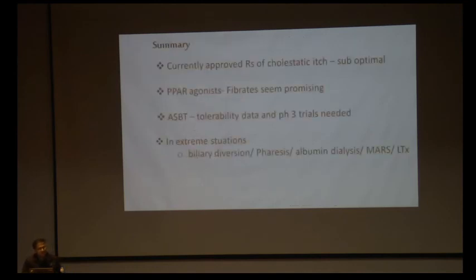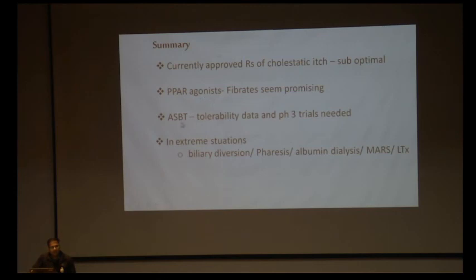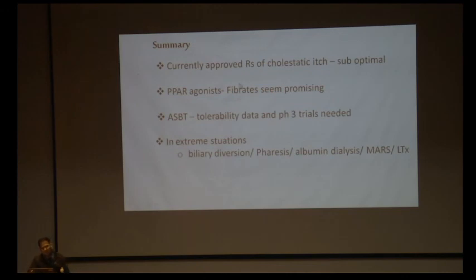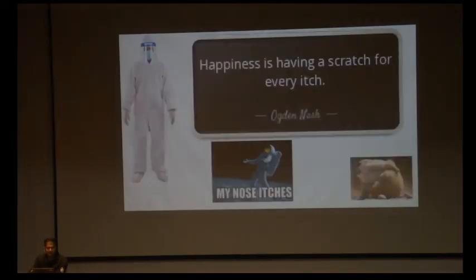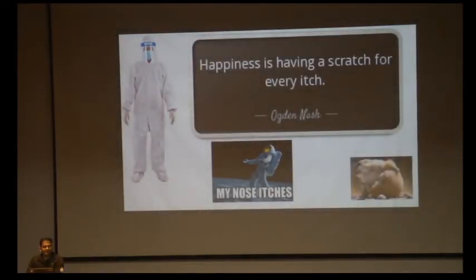In summary, currently approved treatments for cholestatic pruritus are suboptimal and we need newer, more effective, safer, and long-term usable medicines. PPAR agonists like fibrates and ASBT/IBAT inhibitors seem promising but need more real-world data. In extreme situations, biliary diversion, apheresis, albumin dialysis, and liver transplantation remain options. More conservative treatments will hopefully be available in the near future. As the saying goes, happiness is having a scratch for every itch.